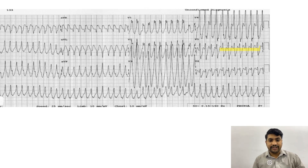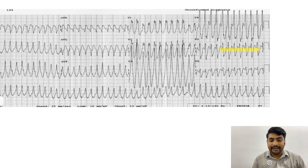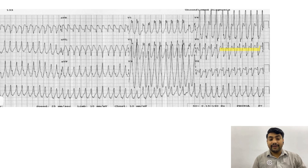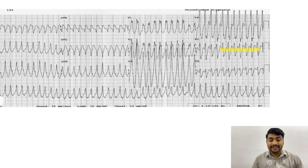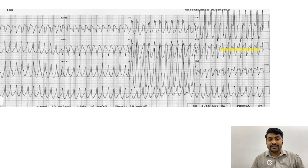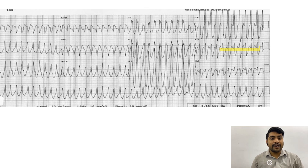For step three, we look for AV dissociation. Can you find a P wave? There is only ventricular activity — no definite P wave is present, so I cannot confirm AV dissociation. P waves and QRS complexes are not coming at different paces because there is no definite P wave. Step three says this is not VT.